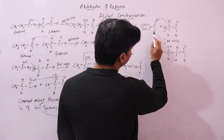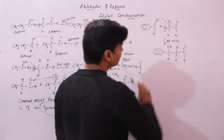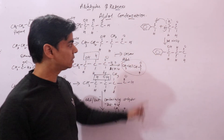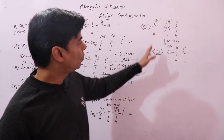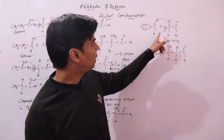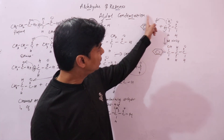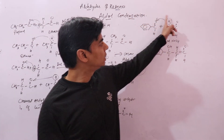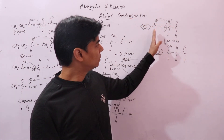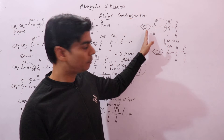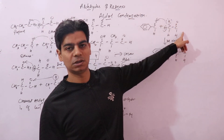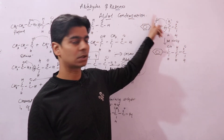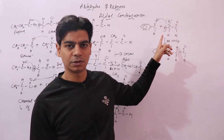In this reaction, acetaldehyde has only one alpha hydrogen. Since benzaldehyde does not contain alpha hydrogen, neither will two molecules of benzaldehyde undergo self-condensation. This prevents the formation of a mixture of products.